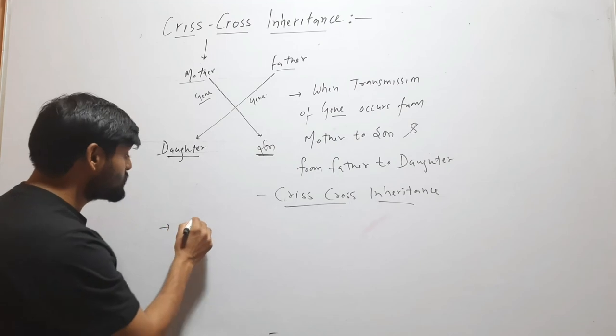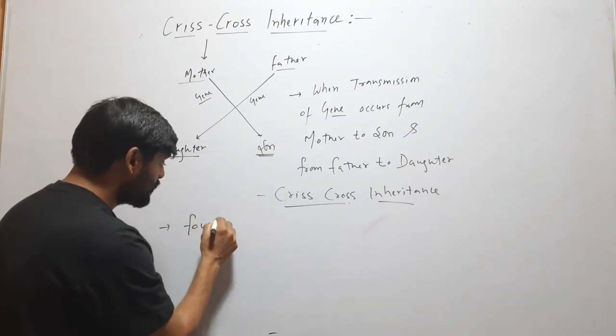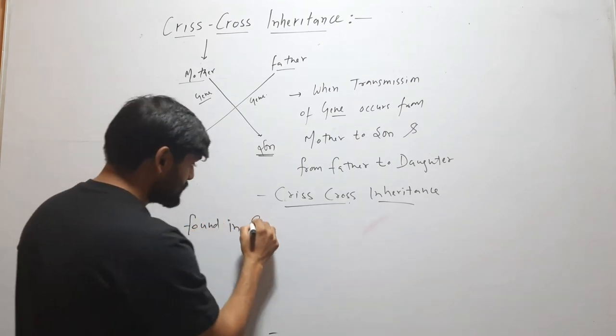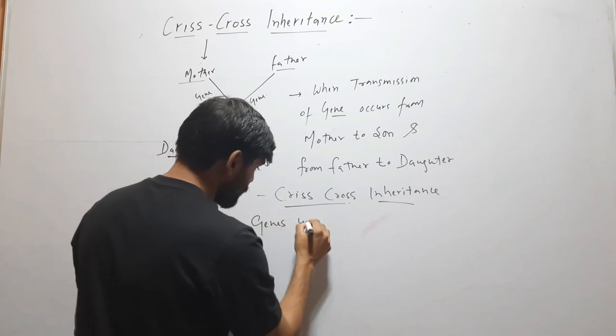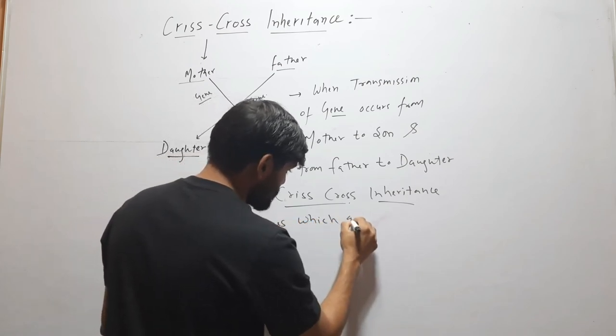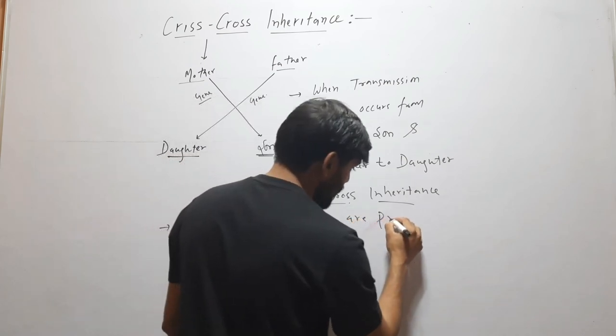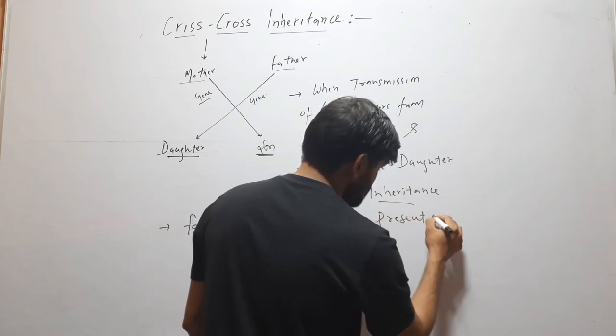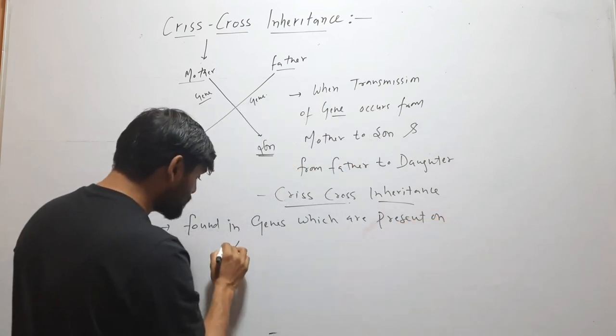This type of cross is found in genes which are present on X chromosome.